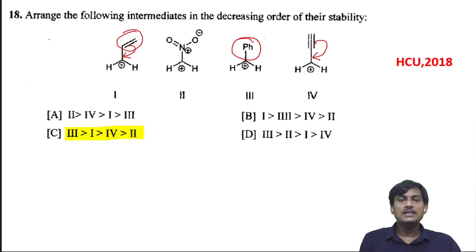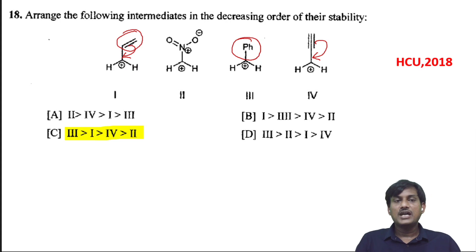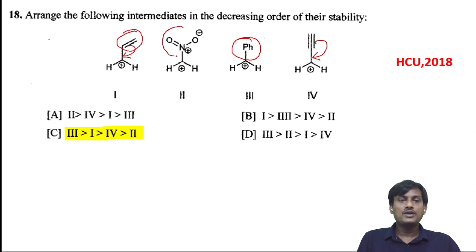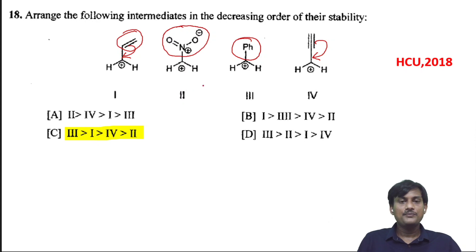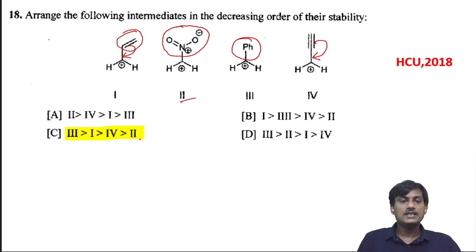When you compare alkynide with alkynide, one is sp-hybridized and more electronegative, so the sp-hybridized carbon can easily release electrons towards the carbocation, making it more stable. The one with an electron withdrawing group should be least stable. So the order is: third, first, fourth, and the least stable is the second one. The correct option is C.